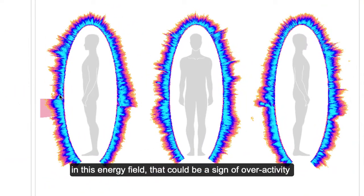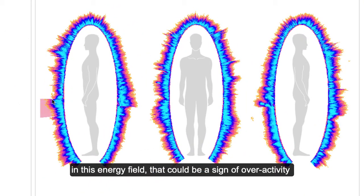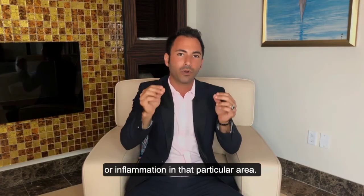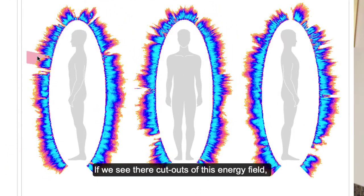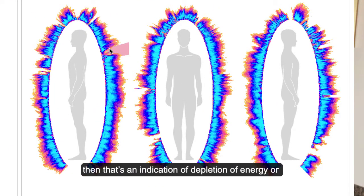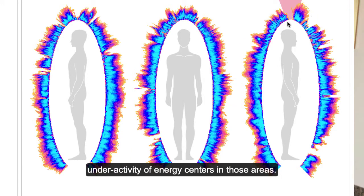If there are any shootouts in this energy field, that could be a sign of overactivity or inflammation in that particular area. If we see cutouts of this energy field, then that's an indication of depletion of energy or under activity of energy centers in those areas.